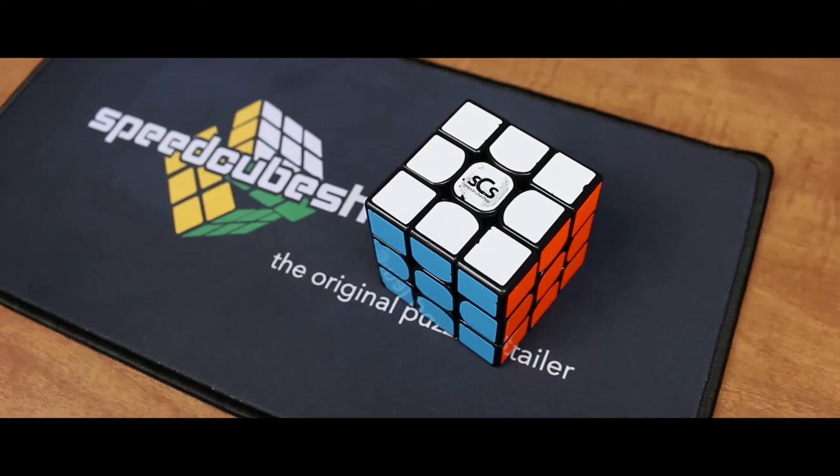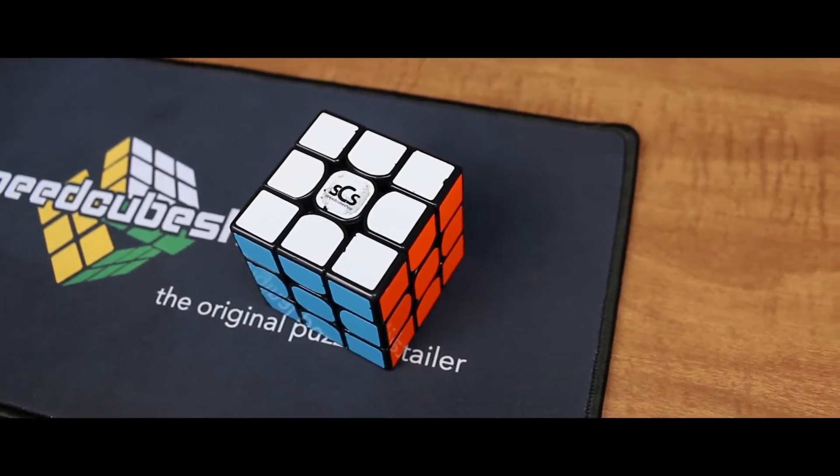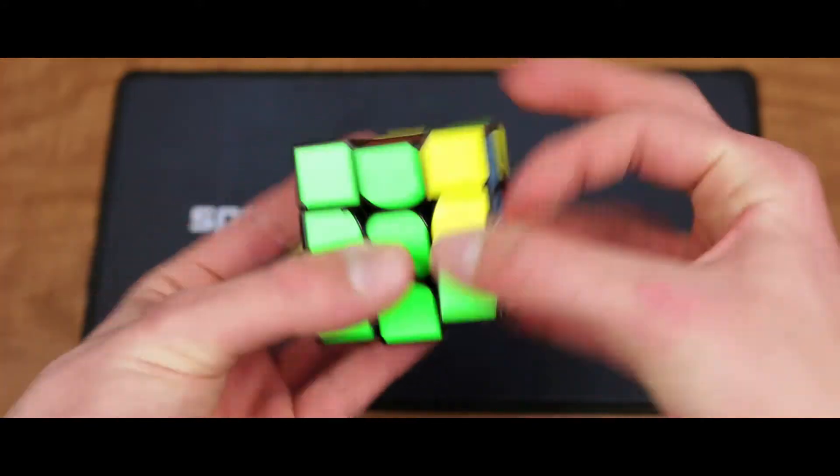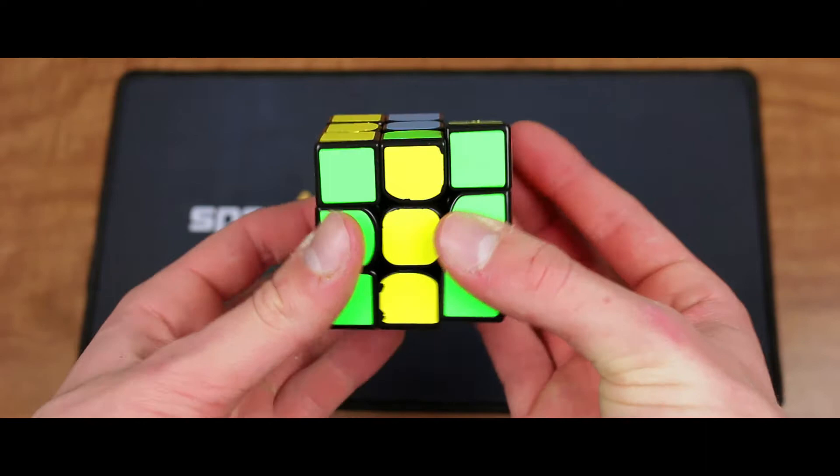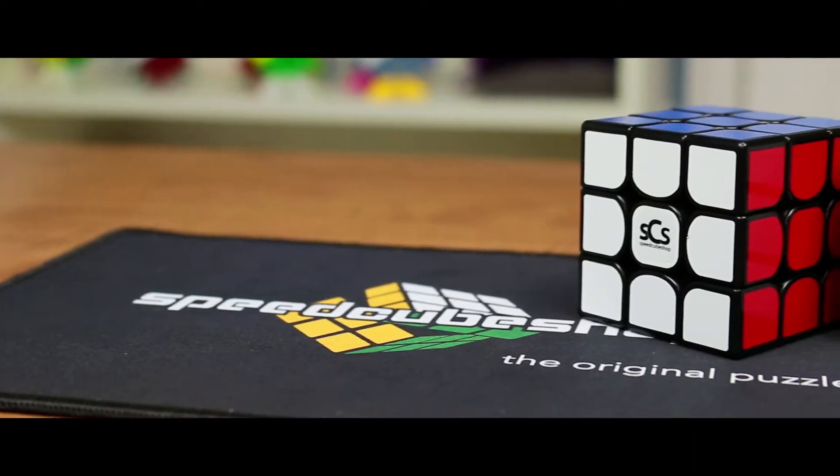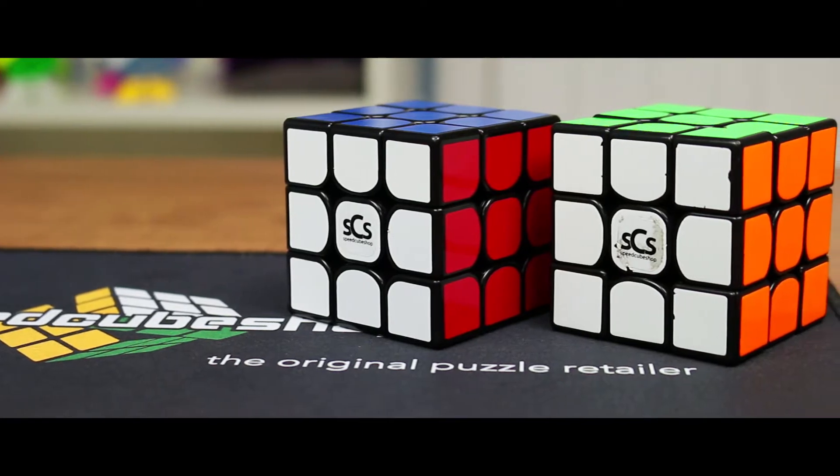When I first started getting into speedcubing, the first cube that I personally bought was the GuoGuan Yuexiao. It was a great 3x3 that had a smooth, hollow feel with fantastic corner cutting and I loved it. But now that the Yuexiao Pro is out, how does it improve upon the original Yuexiao, if at all? Let's find out.